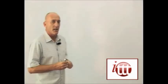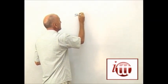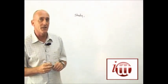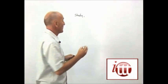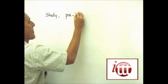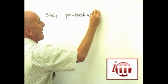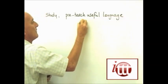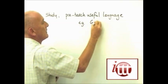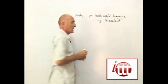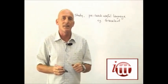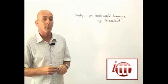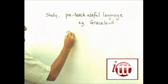From that point we can then move on to our first study activity. In this particular phase of the lesson it would be useful to pre-teach some language — this would include names of things like Graceland and so on and so forth as it relates to Elvis Presley. So do some pre-teaching of vocabulary and then do a check of understanding.